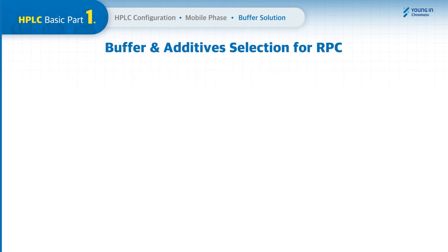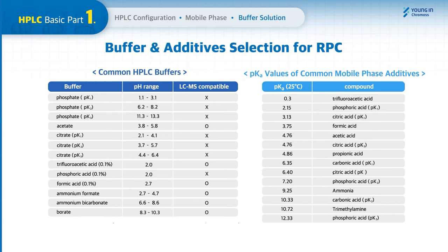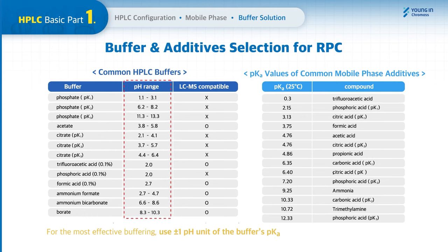There are certain recommendations for buffer selection. A table provides commonly used buffers and additives including pH range and pKa values. For most effective buffering, a buffer should be used within plus or minus one pH unit of the buffer's pKa. The most popular buffers for HPLC with UV detection are phosphate and acetate, due to their UV cutoff properties.